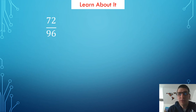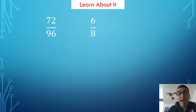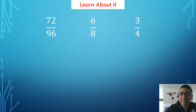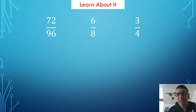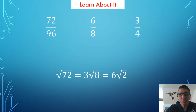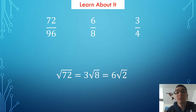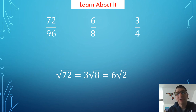This process of finding equivalent square root expressions is similar to simplifying fractions. We started with 72 over 96 and simplified to 6 eighths, but that is not simplified all the way because we can divide numerator and denominator by 2 to get 3 fourths — now in simplest form. The same is true for square root expressions: the square root of 72 equals three square roots of 8, which equals six square roots of 2. So here we have three radical expressions all equivalent to each other. Six times the square root of 2 is the most simplified because it uses the smallest possible right triangles to fit into that shape.